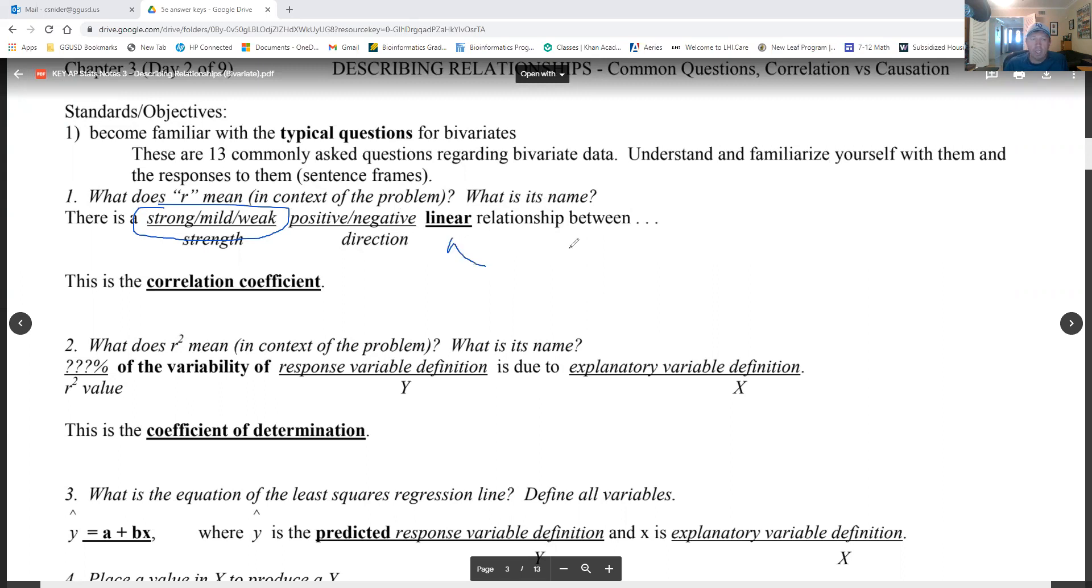Strong, mild, or weak, and then positive or negative, and then the word linear is always in there. Obviously if the dots are like this, that's a negative association. We did all that yesterday. Now you can use other words, mostly strong, whatever, but typically strong is 0.8 or above or negative 0.8 and below. 0.6 to 0.8 is mild, and then between 0.6 and negative 0.6 is usually weak.